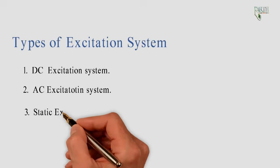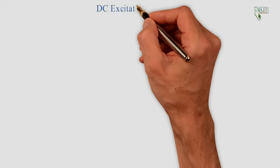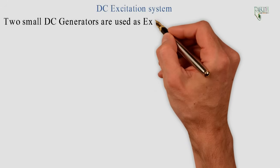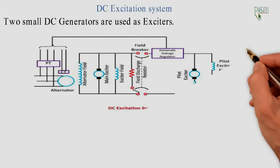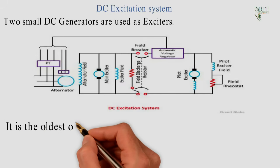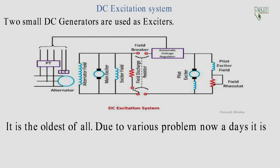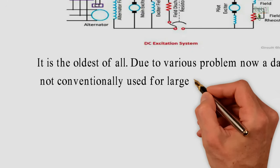DC excitation system: Small DC generators are used as exciters. As it is the oldest of all, due to various problems nowadays it is not conventionally used for large alternators.